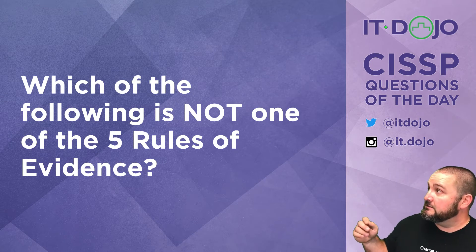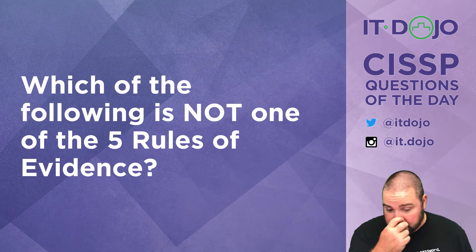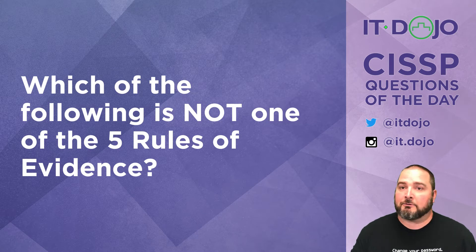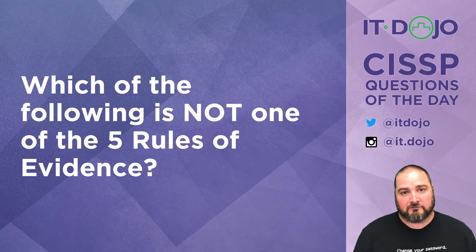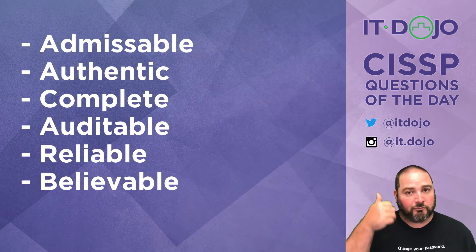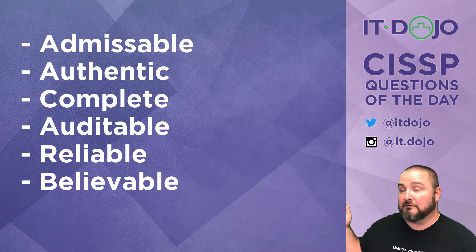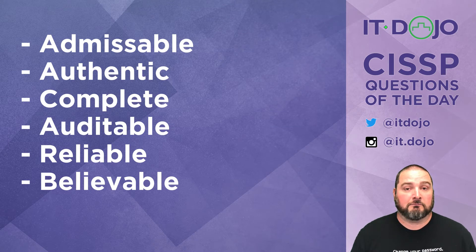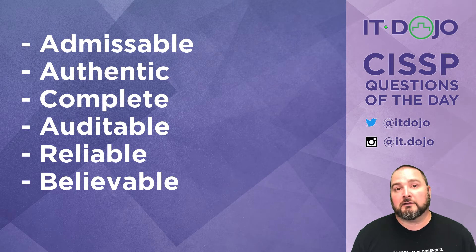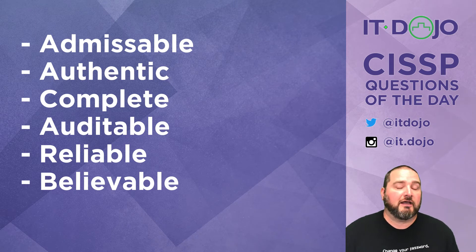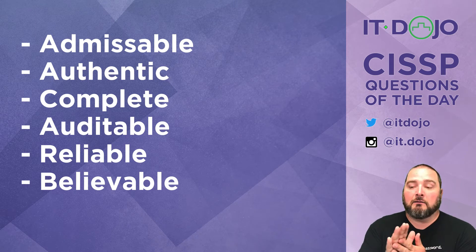First question for you today is: which of the following is NOT — capital N, capital O, capital T — not one of the five rules of evidence? There are five rules of evidence. Which of them is not one of them? There's your list. Click pause if you have to, choose your answer, then click play.